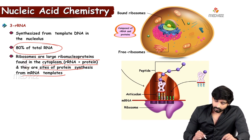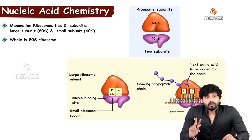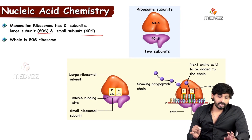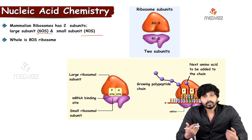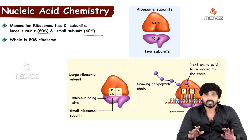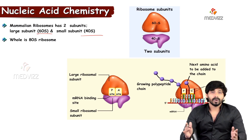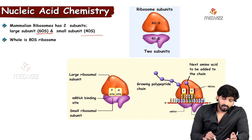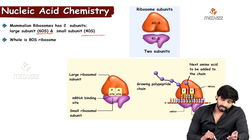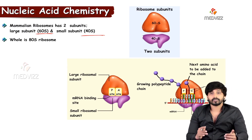Ribosomes have two major subunits. There are two types of ribosomes — in eukaryotes, the 80S ribosome, and in prokaryotes, the 70S ribosome. The 80S ribosome is divided into two subunits: the 60S and the 40S. The larger 60S subunit has two sites: the P site and the A site.